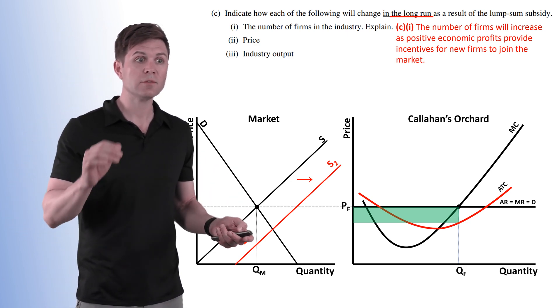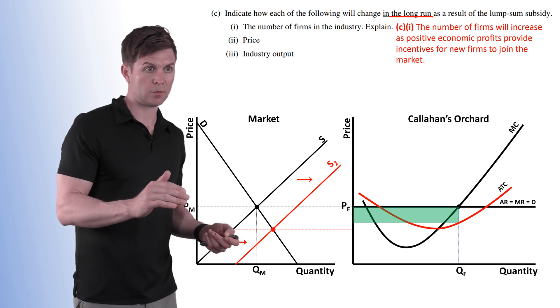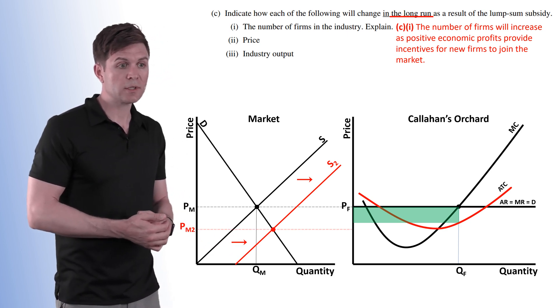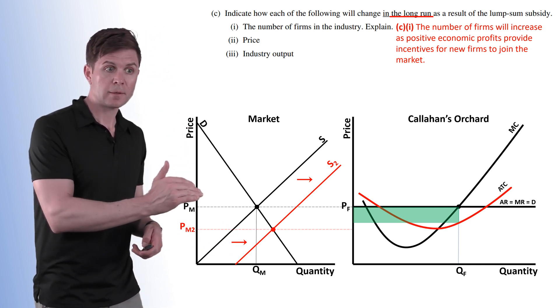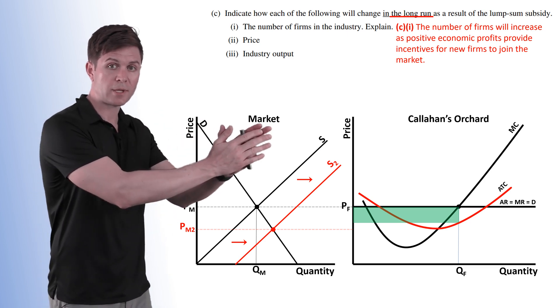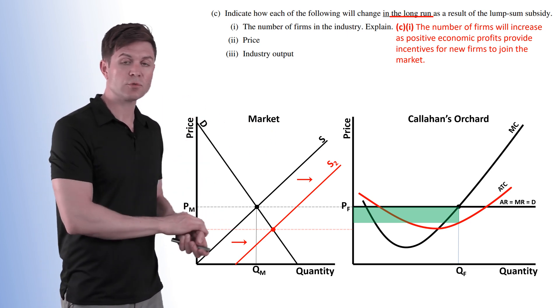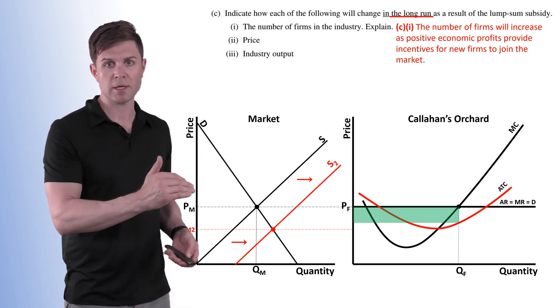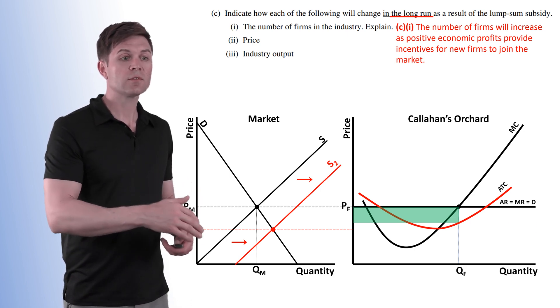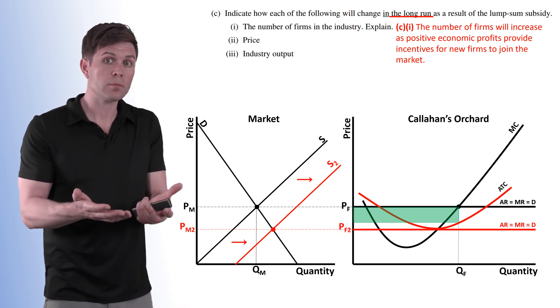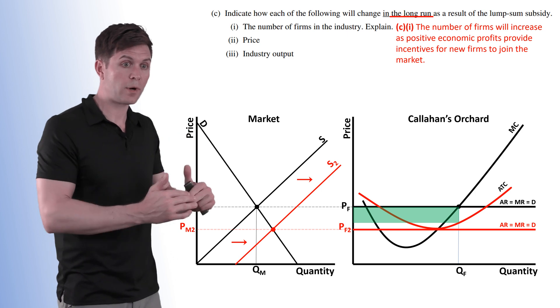Now, what is going to happen to the price at the market level? The price in the market level is going to drop because of that increase in supply. We have a new equilibrium. PM2 is our new price lower than what PM was. This is also going to drop the price for the firm. The firm is going to have a lower price now.